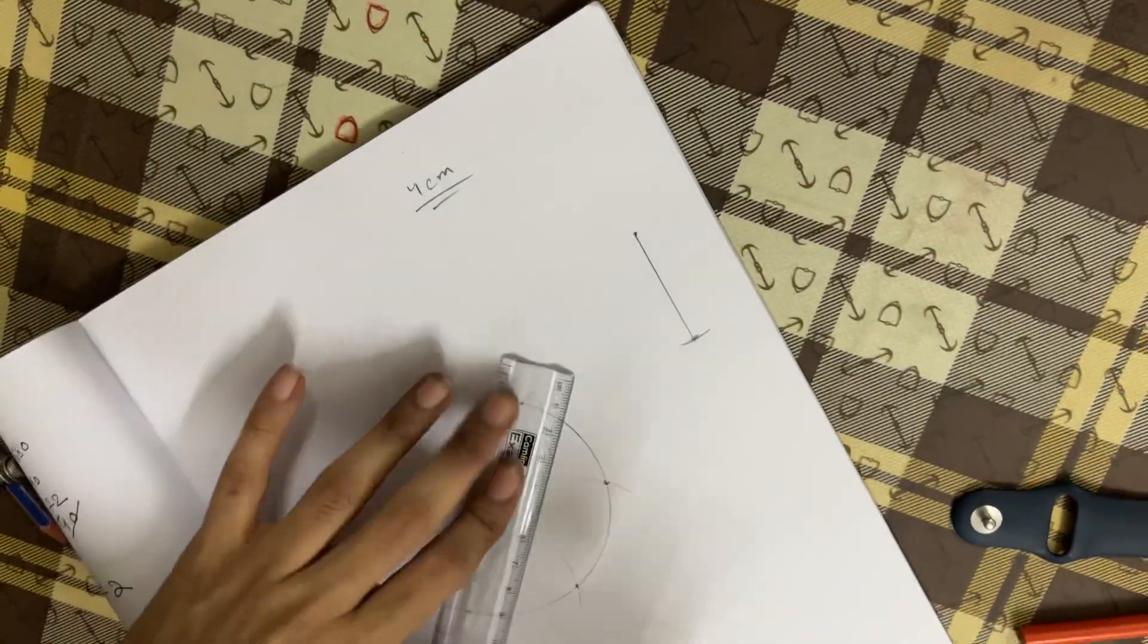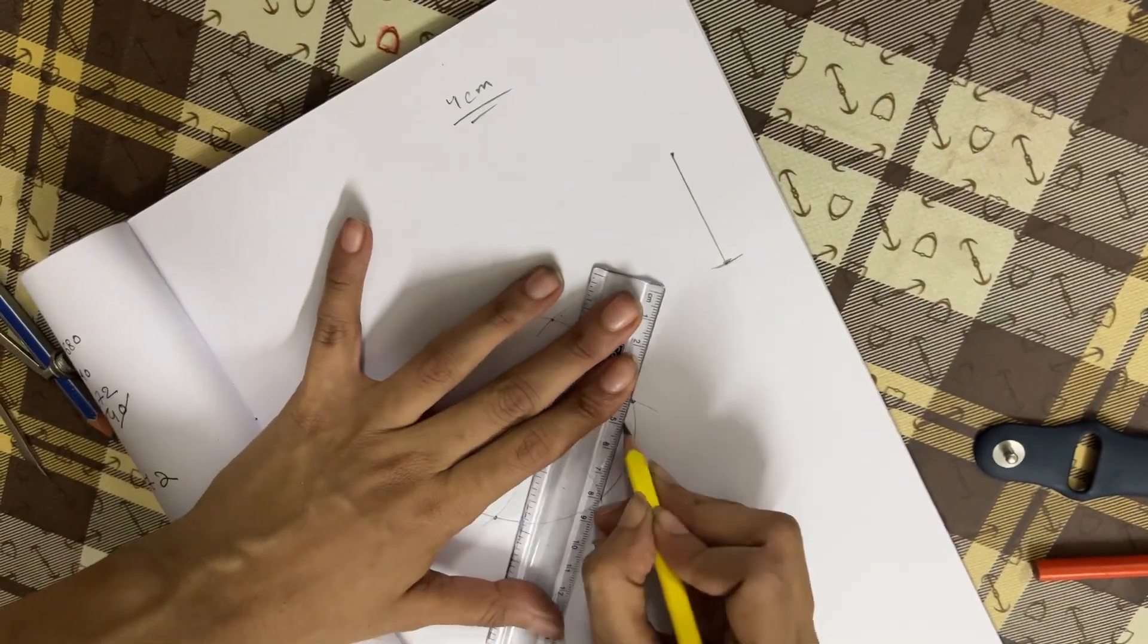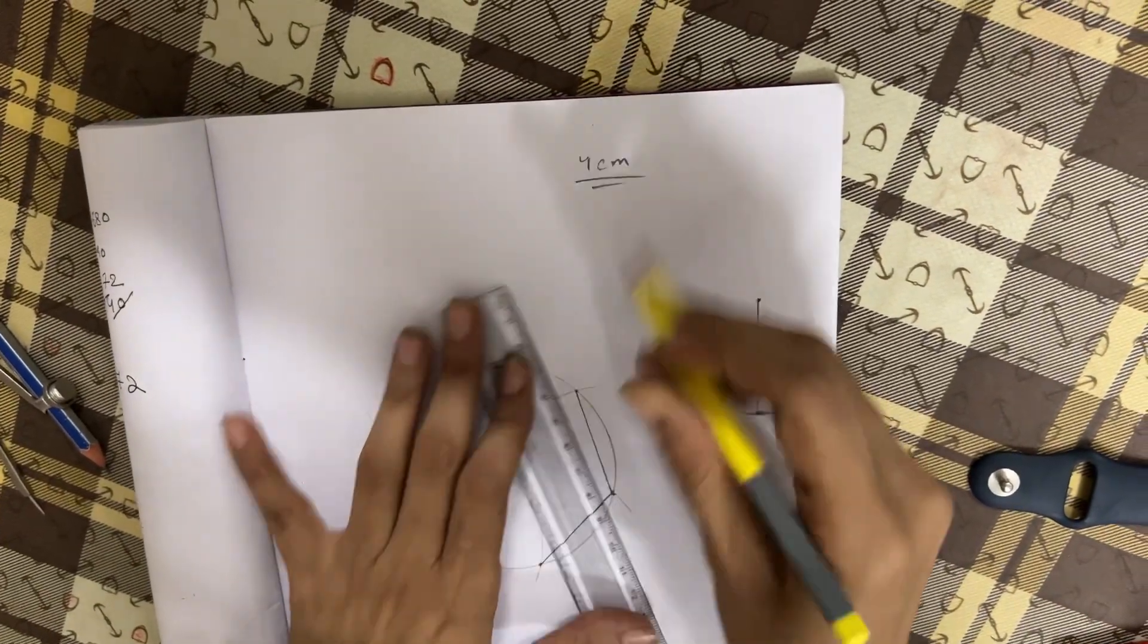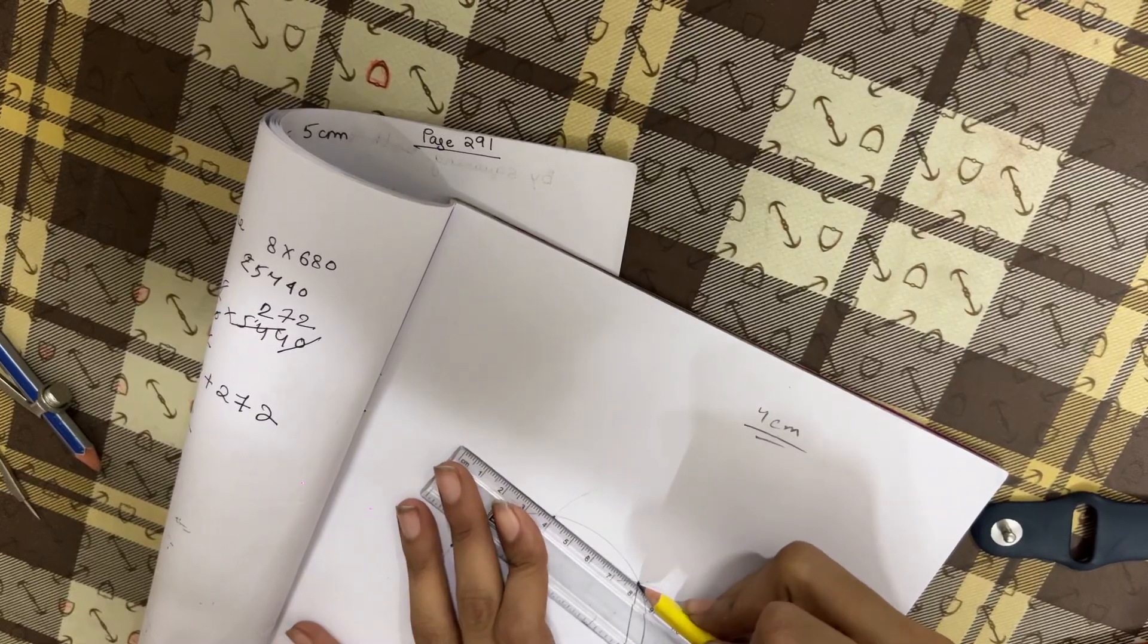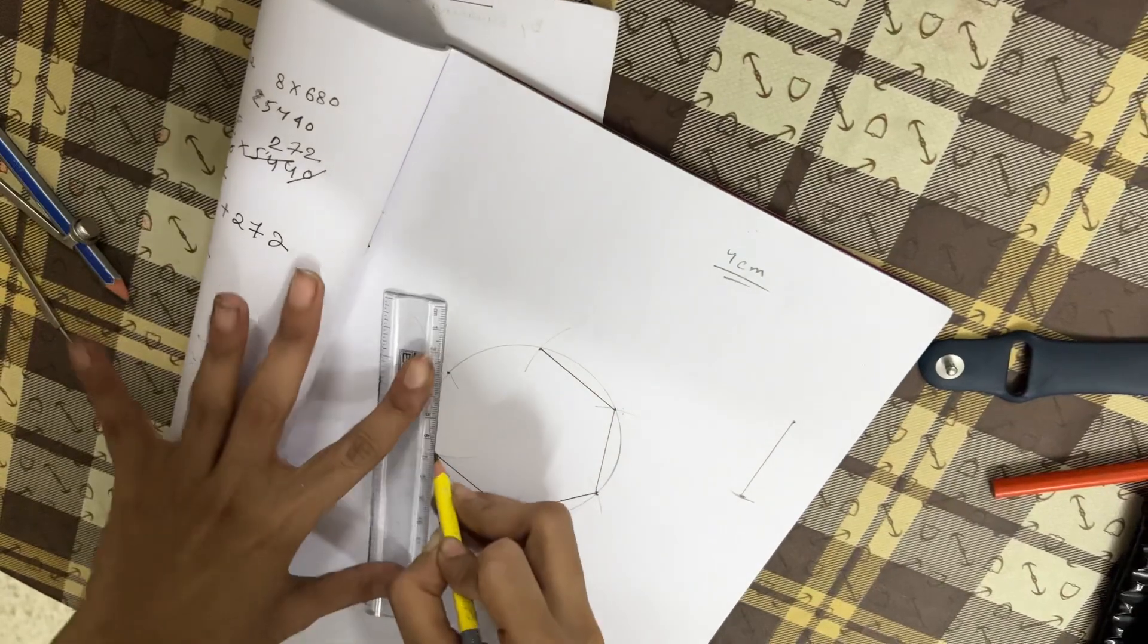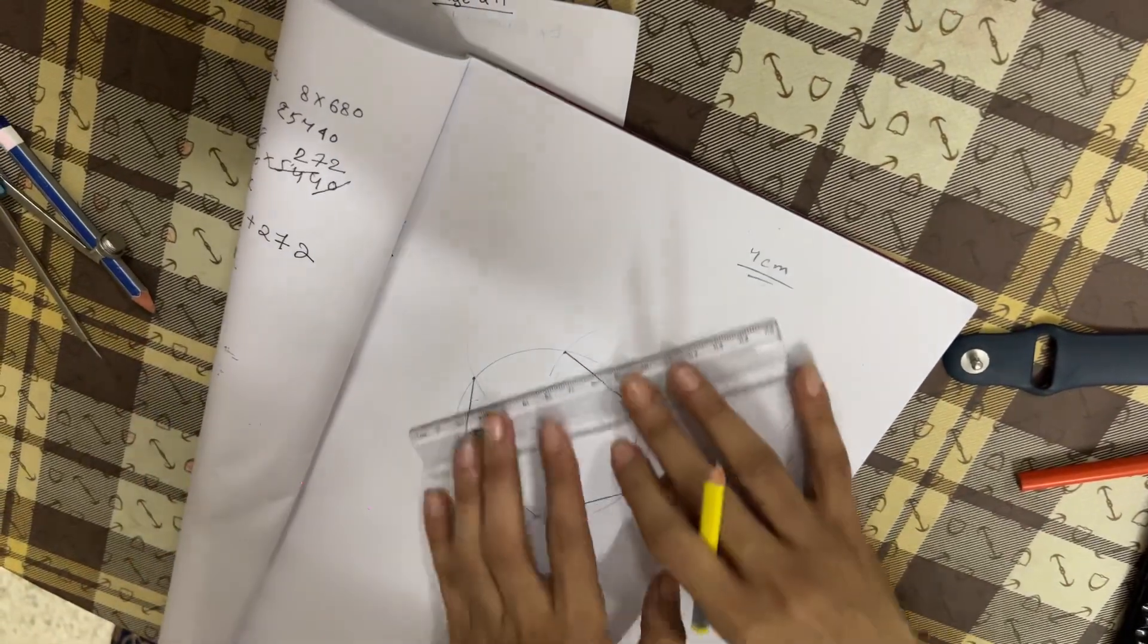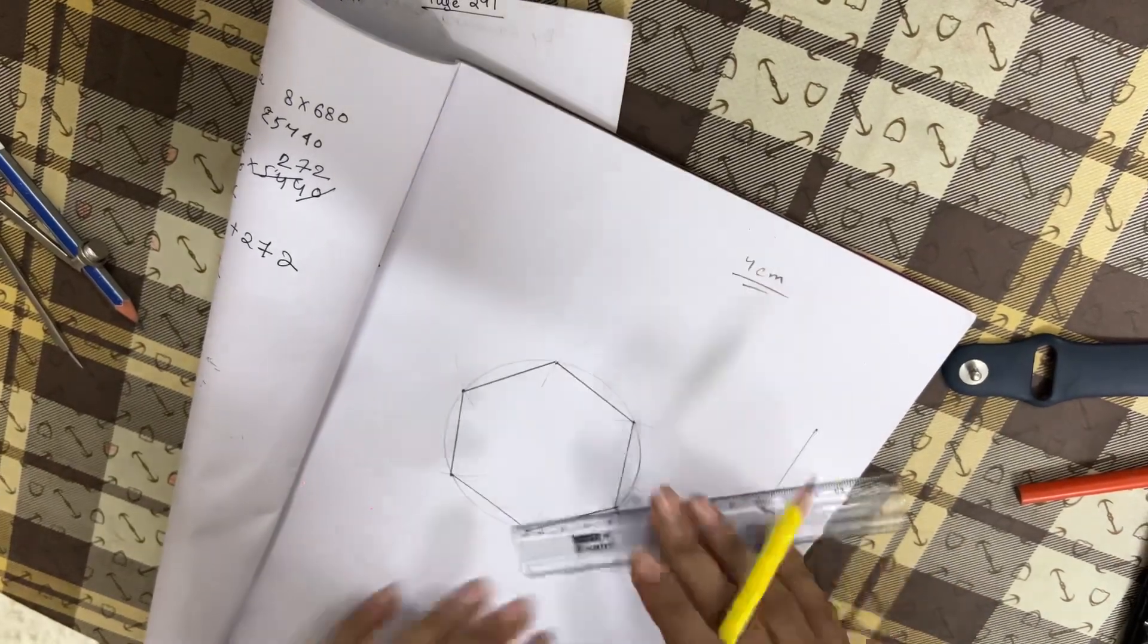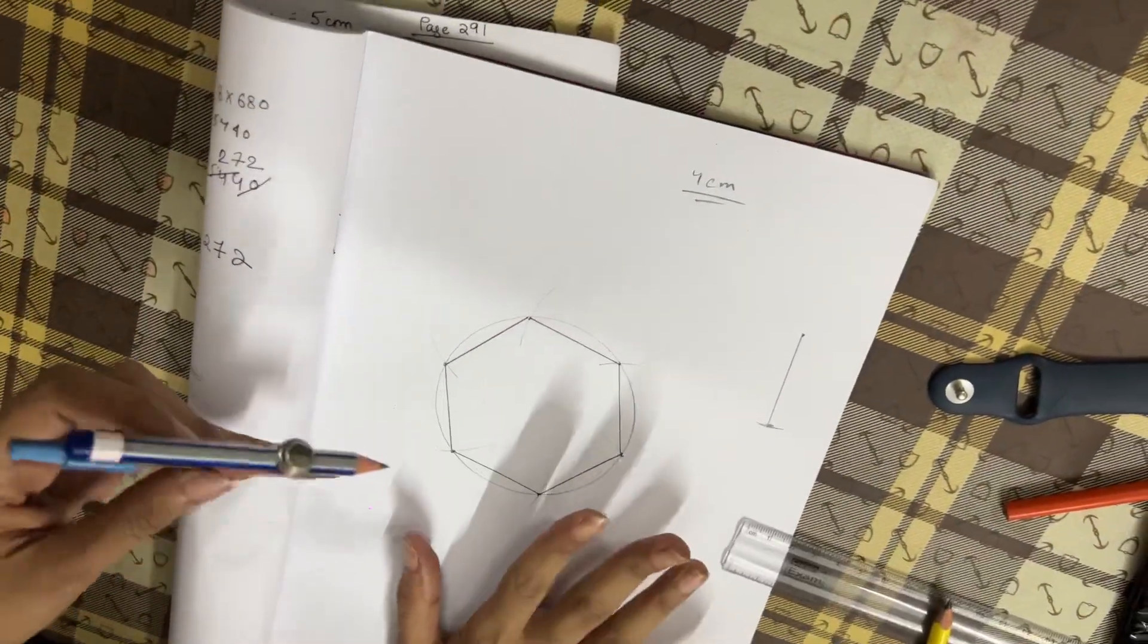And then just join them. It's that easy. Done. And this is also the circum circle, but you will have to show...